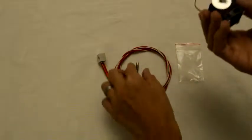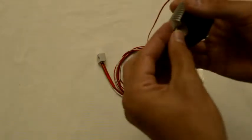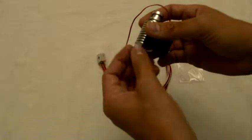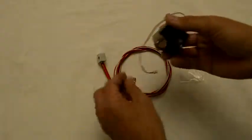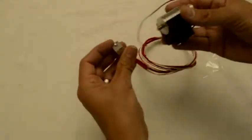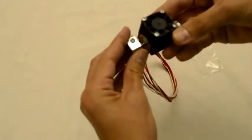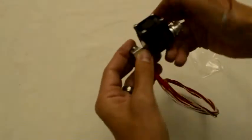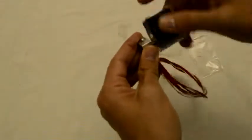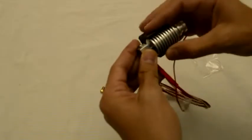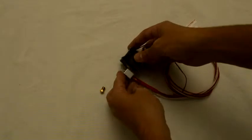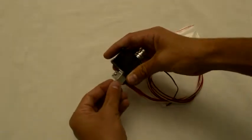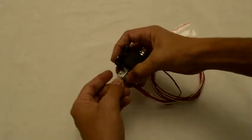To assemble the hot end, we will take the heat sink and screw the heat break in. We will screw this into the heater block, just so that it goes in. We will take the nozzle and screw it in from the bottom.